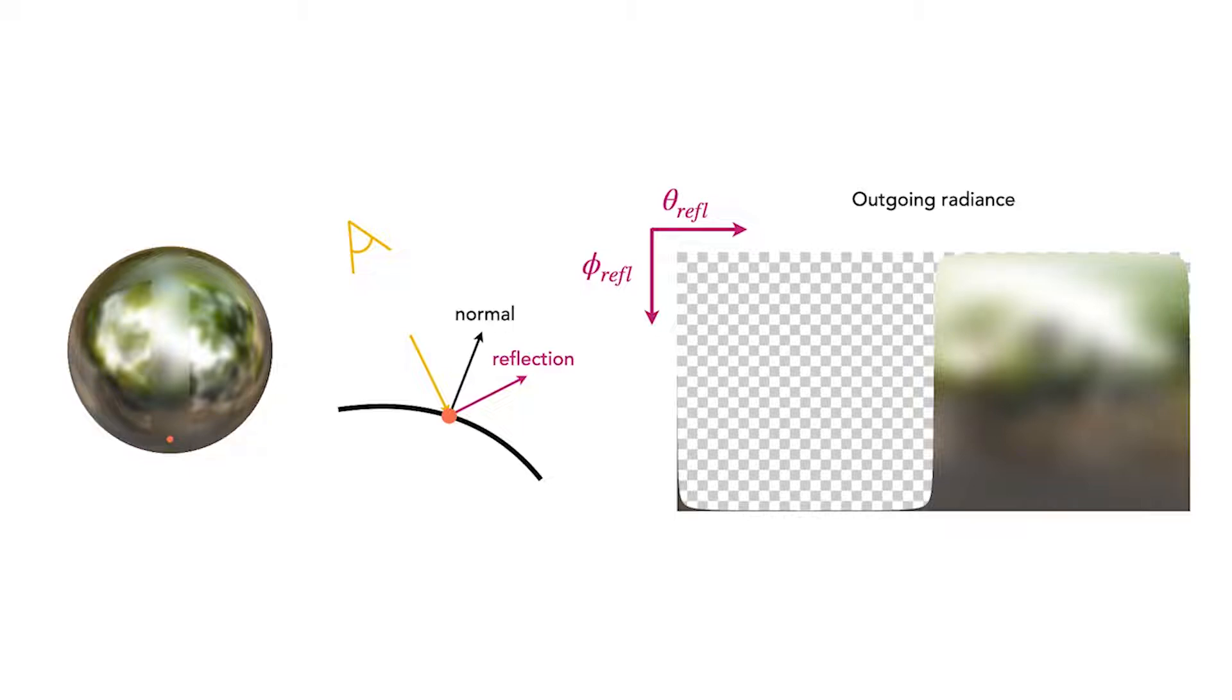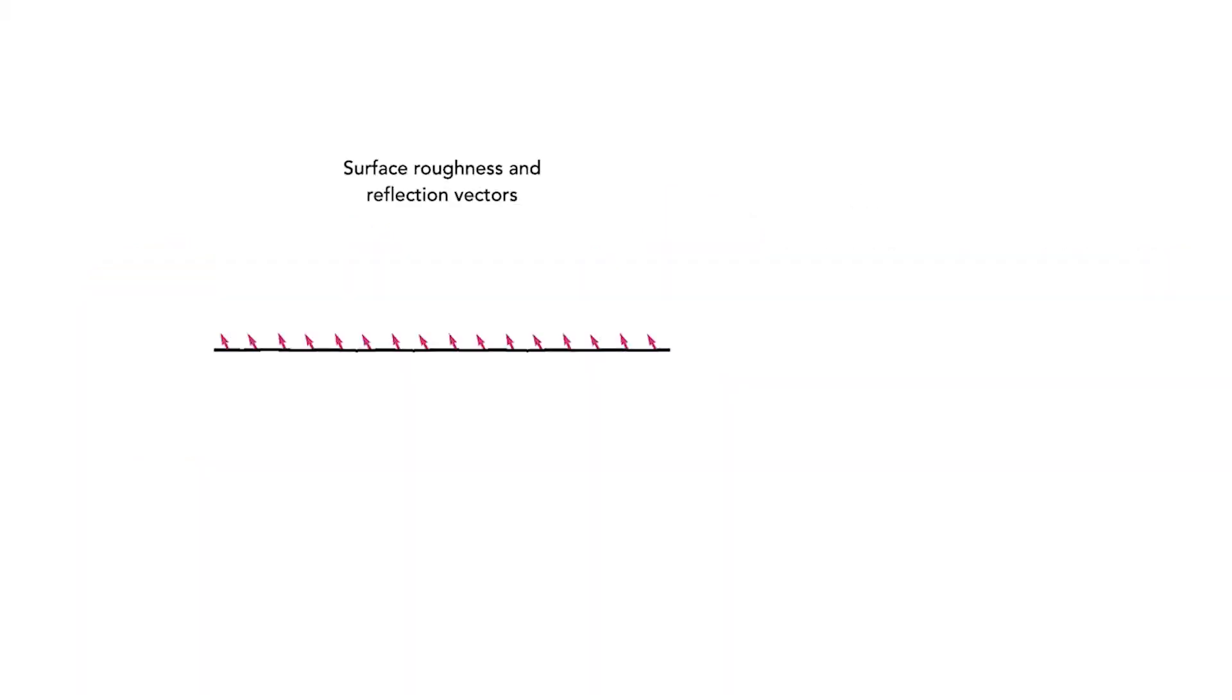We introduce a technique that allows the network to easily represent this blurring of outgoing radiance for points with different roughnesses. First, we predict a scalar roughness at any 3D location, which defines a Gaussian-like distribution over reflection directions at that point. Shiny materials have a concentrated distribution of reflection directions, and rough materials have a wider distribution corresponding to blurrier specularities.